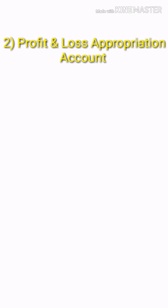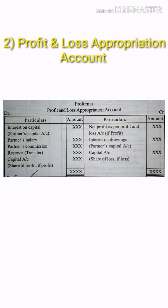Now let's learn the Profit Appropriation Account. This account is prepared to distribute the profit among partners. The debit side of this account includes: Interest on Capital, Partner's Salary, Partner's Commission, Reserves, and Share of Profit.